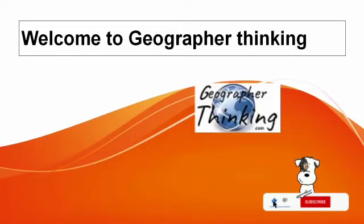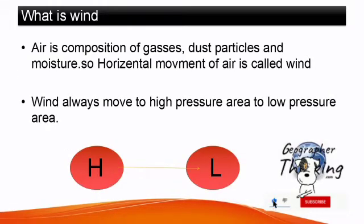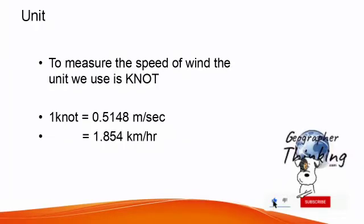Hello students, today my topic is monsoon winds. First, I will discuss a short introduction of winds. Air is a composition of gases, dust particles, and moisture. The horizontal movement of air is called wind. Wind always moves from high pressure areas to low pressure areas. The instrument used to measure wind is an anemometer.